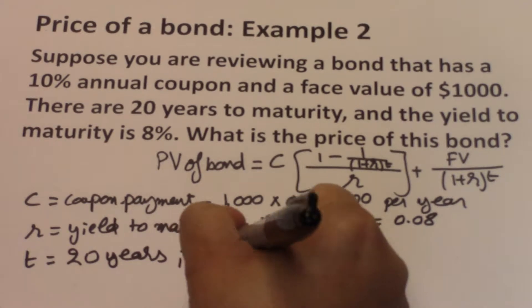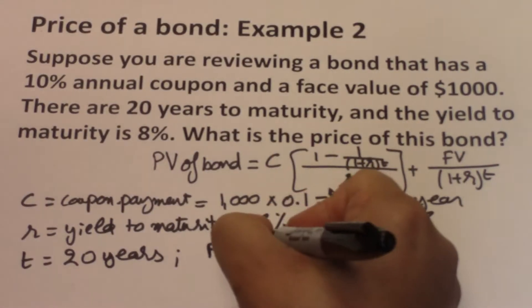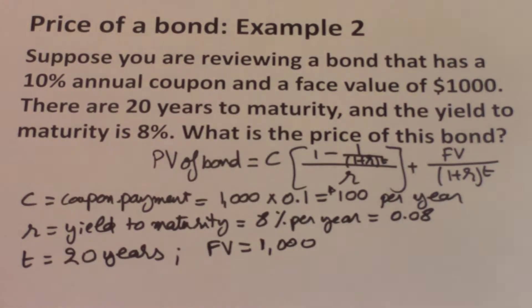And future value, that is the face value or the par value of the bond, and it is here as $1,000.